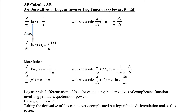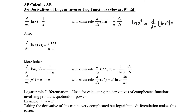First of all, the derivative of natural log of x is just 1 over x. If you apply this with the chain rule, so if we have ln(u), we're going to say 1 over u times du/dx. For example, if you had the natural log of x squared, the derivative with respect to x would become 1 over x squared times 2x — that's the chain rule. So another way to think of it: if you have the natural log of some function, it's 1 over the function times the derivative of that function.